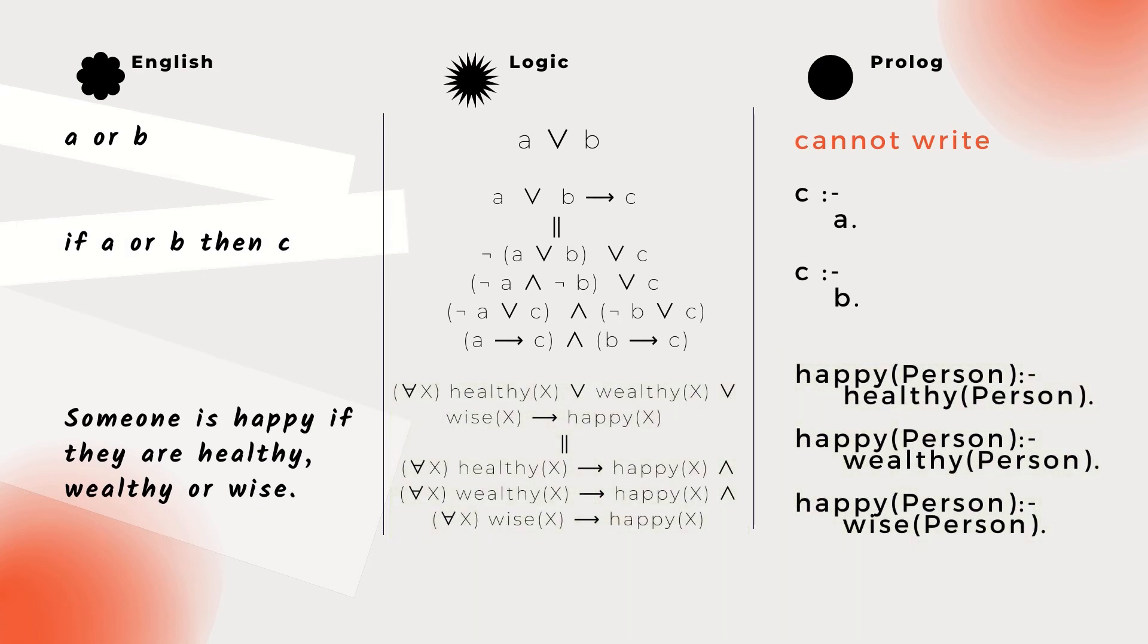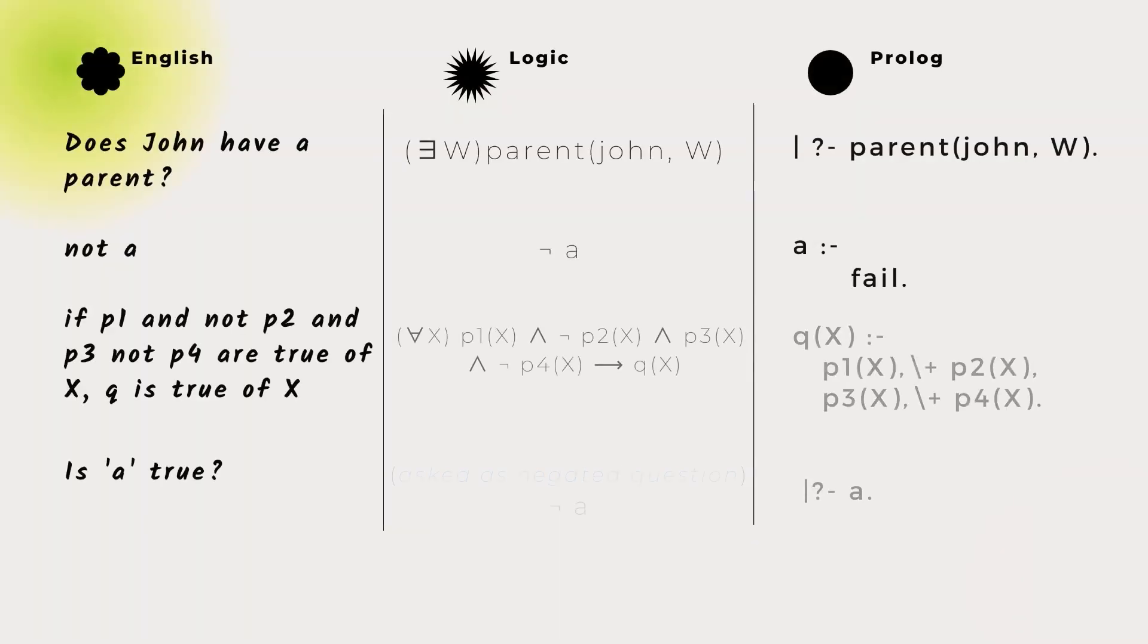Predicate logic also has existential quantifiers. Like universal quantifiers, these are represented only implicitly in Prolog. Every variable in a query is existentially quantified.